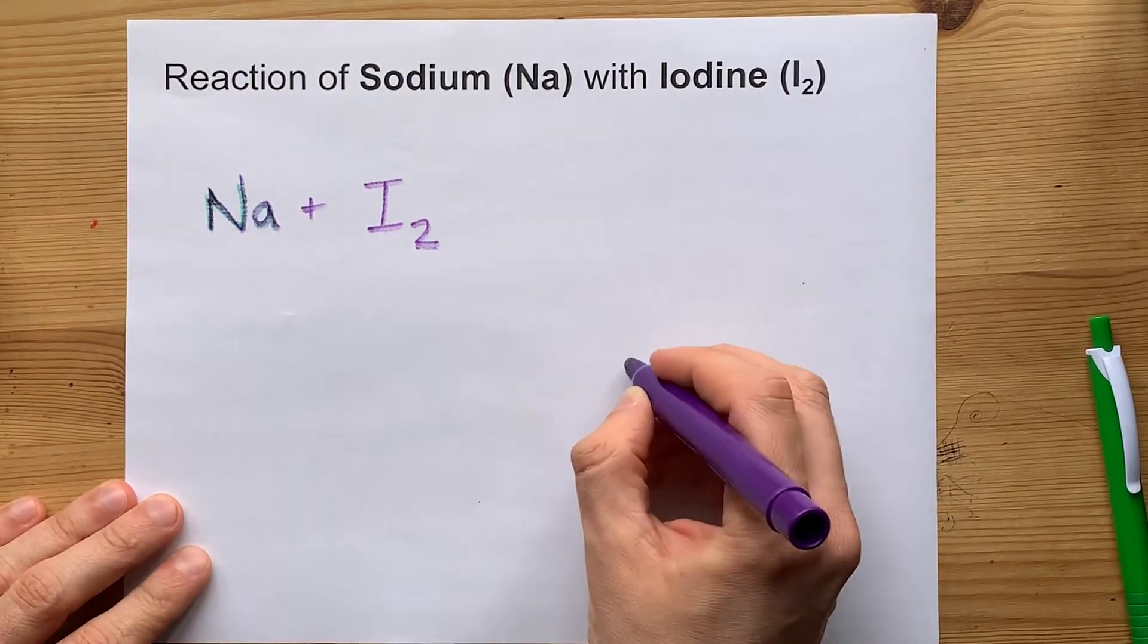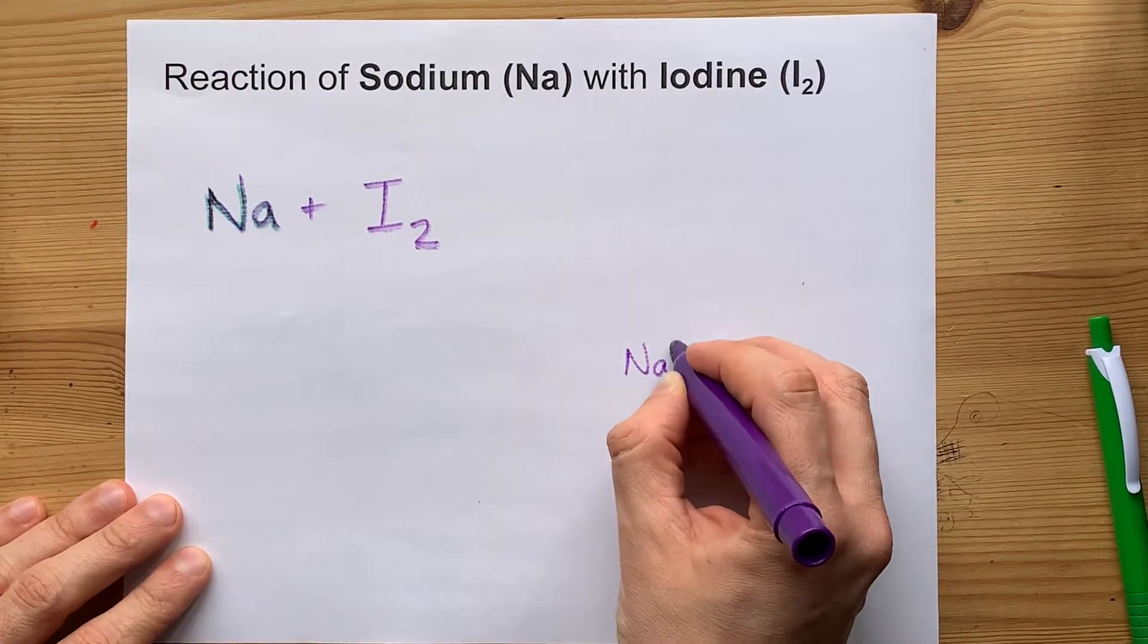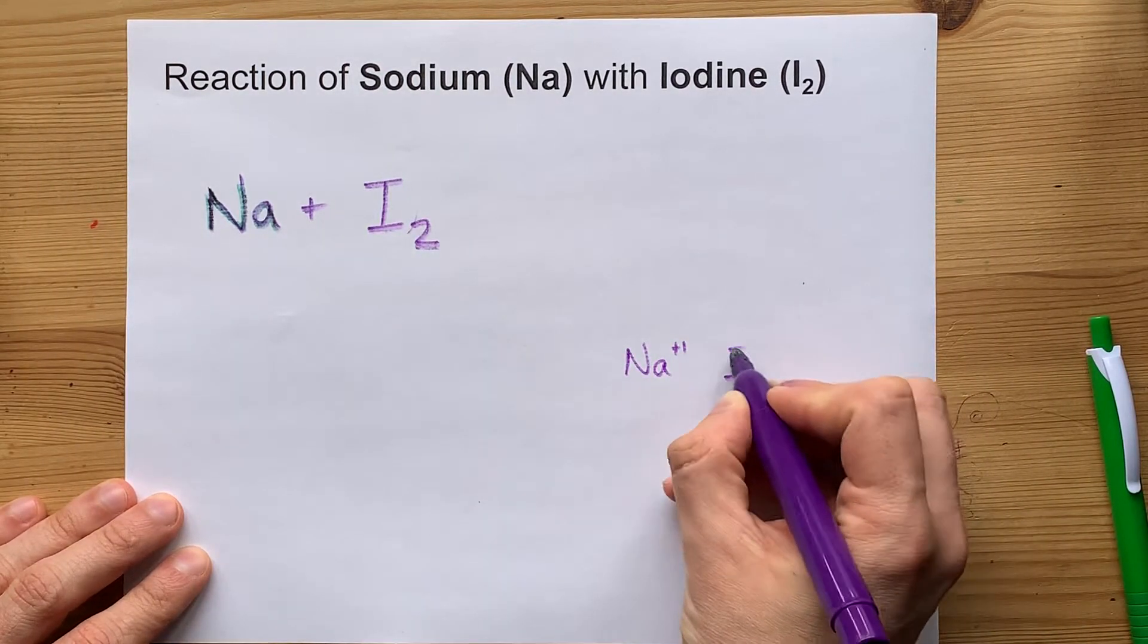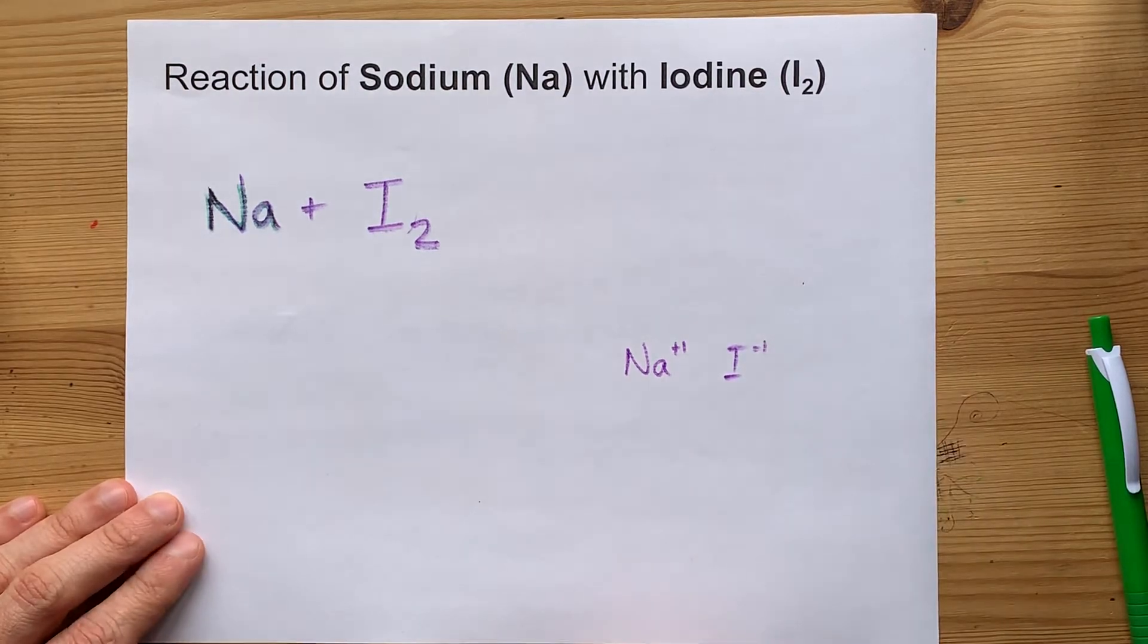The metal likes to lose electrons to become an Na plus one ion. The non-metal likes to gain electrons to become an I minus one ion.